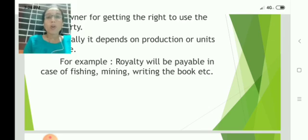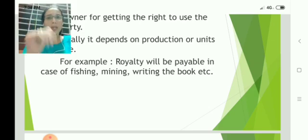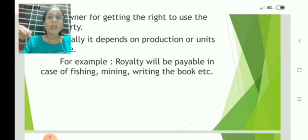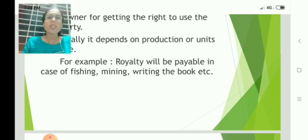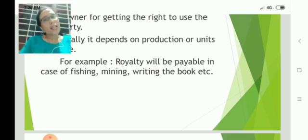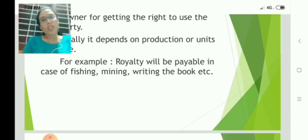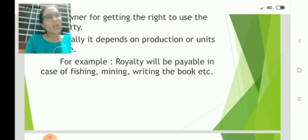For example, if you write a book on accountancy and approach a publishing house, the printing press or publishing house will print your book and sell it to the public. The payment made to you for using your work is considered as royalty.